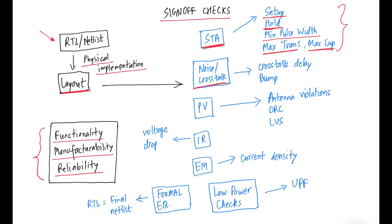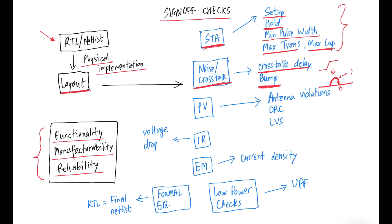The next category is noise or crosstalk. Crosstalk delay means a signal switching on a wire can get slowed down or sped up due to a switching signal on a neighboring wire, causing setup or hold violations respectively. The bump or crosstalk noise violation means a switching neighboring net can cause a bump on a static signal, causing a 0 to be misinterpreted as a 1, leading to logic failures. All bump violations need to be fixed.